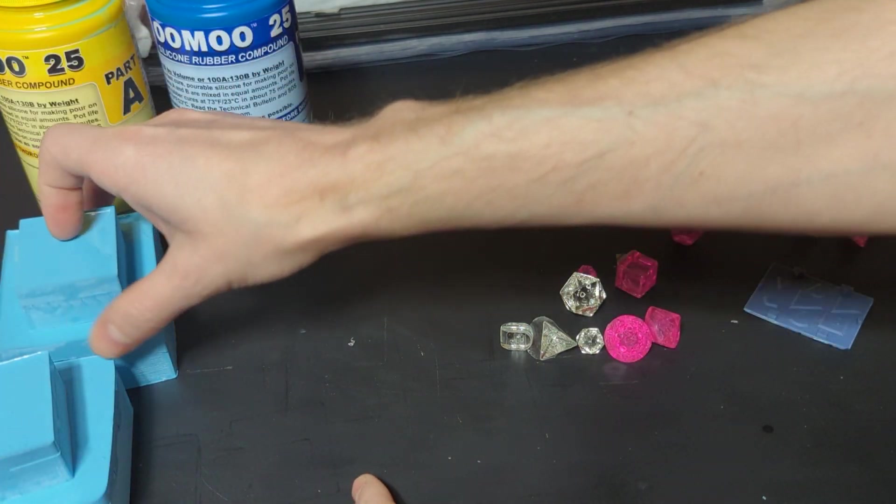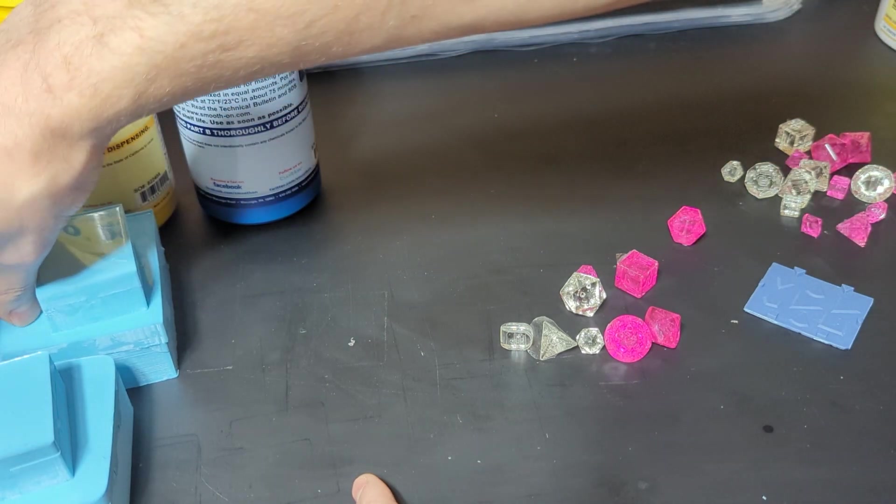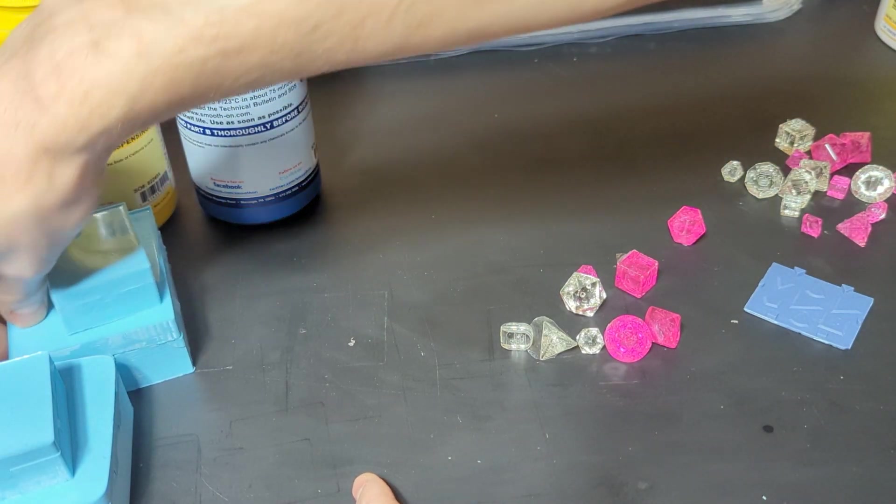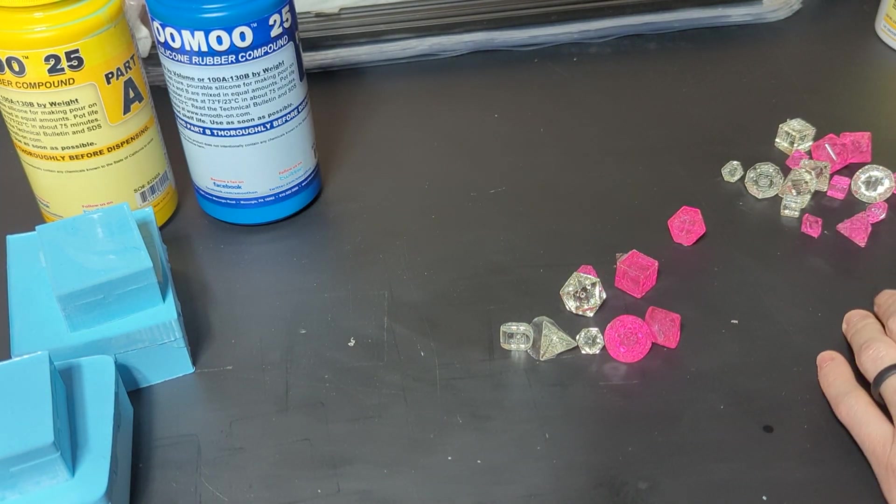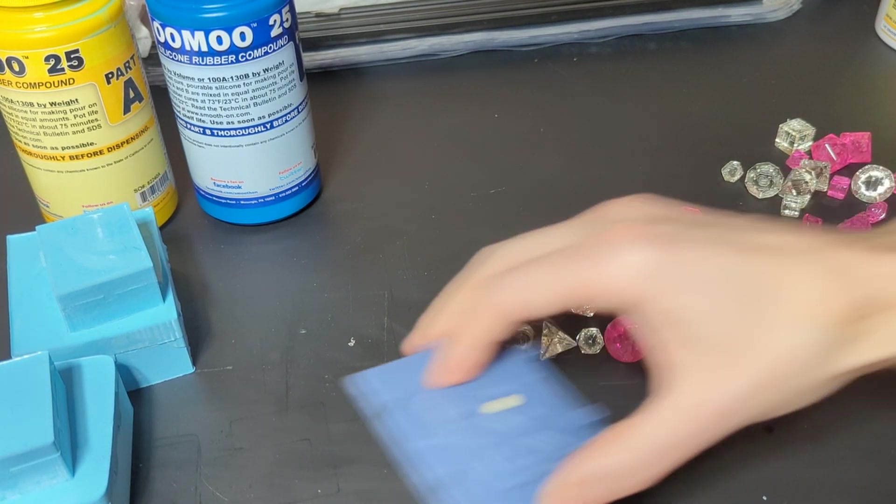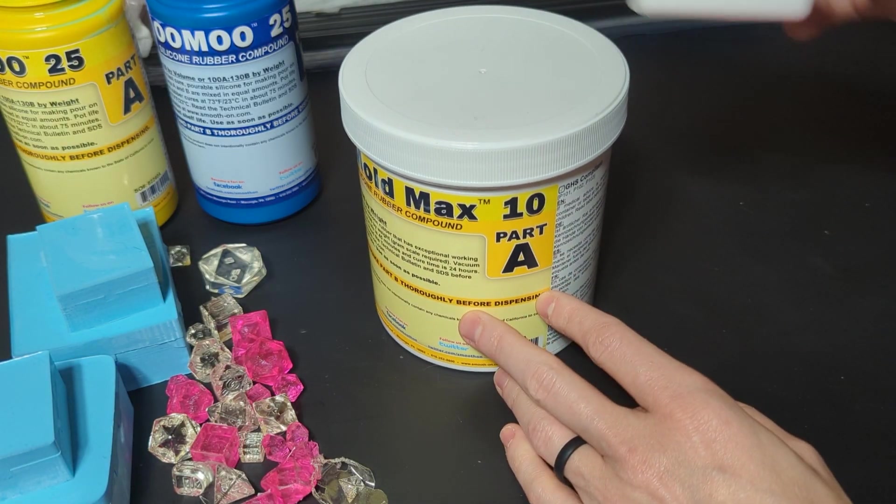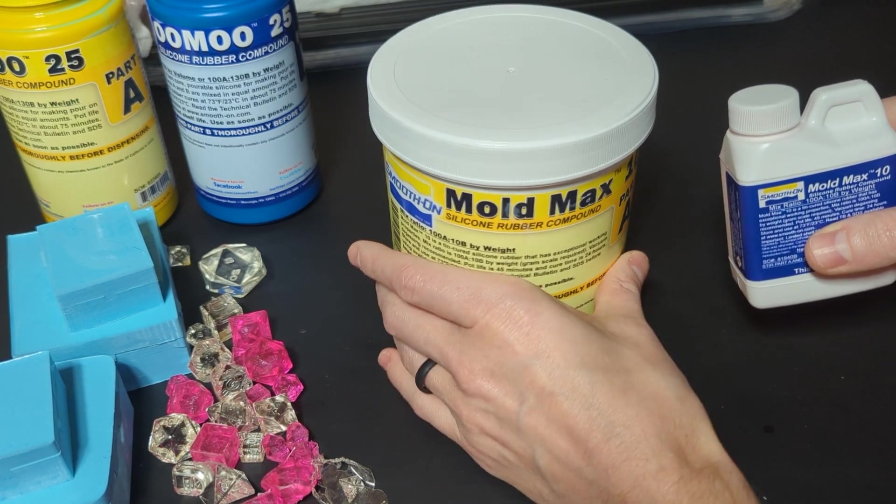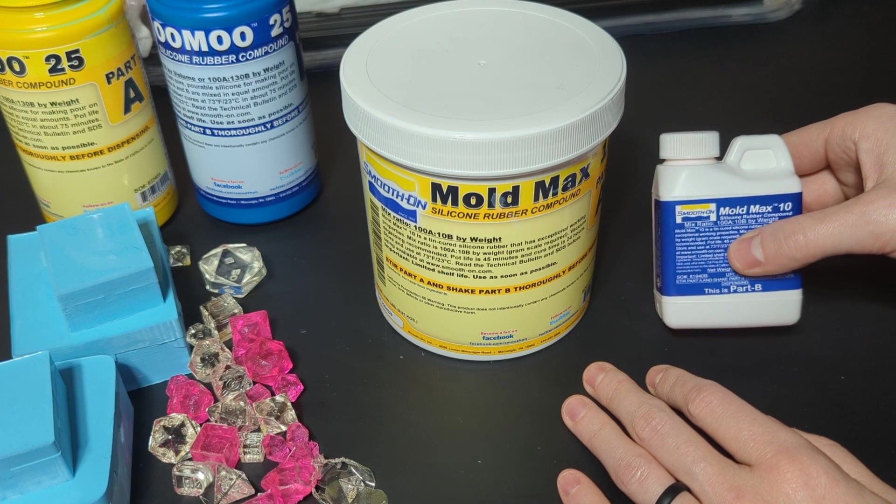Now what I really want to talk about is what I'm probably going to start doing now from now on instead of trying to do two different ones or have cure inhibition and all that worried about. You could just use your tin cure and I found some 10 shore hardness stuff. I got this, it's the Mold Max 10 and it's 1 by 10, or they say 10 by 100. You have to do this stuff by weight.